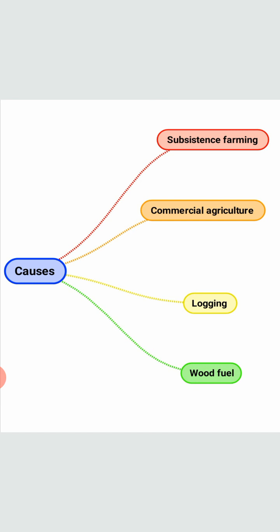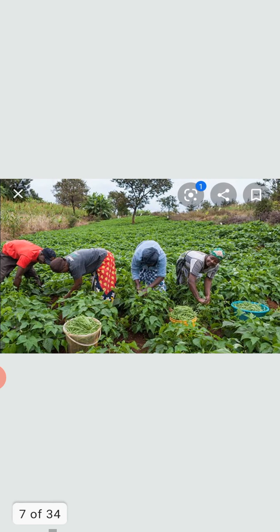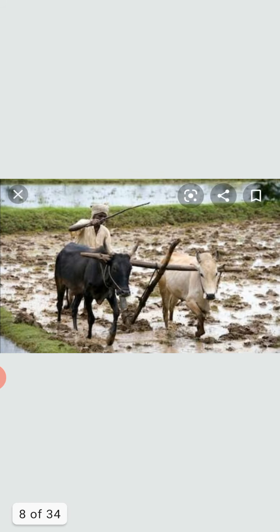Let's discuss these terms one by one. Subsistence farming is farming by local people, traditionally by family groups. In this, small parts of the forest are cut and burned down to make room for a family's crops and livestock.